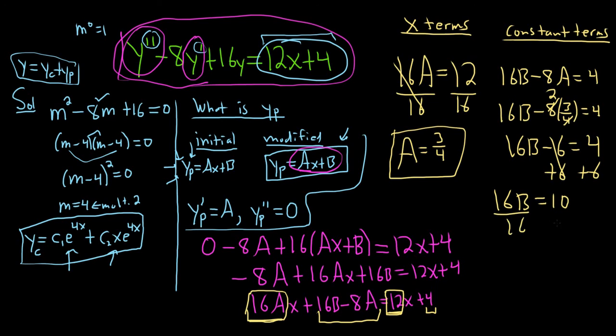Dividing by 16, it's going to give us b equals 5 eighths. I'm going to put that in a box.